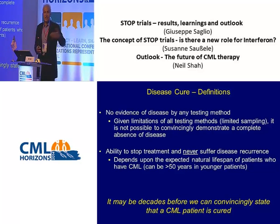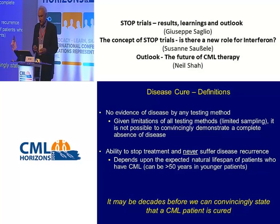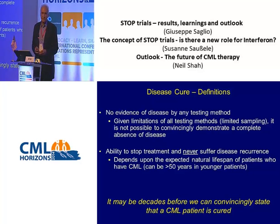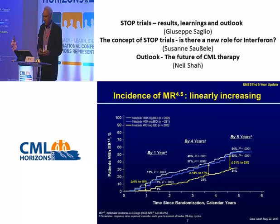What does it mean to never suffer disease recurrence? We have follow-up of five or ten years in some rare instances of patients who've stopped therapy. But for somebody who's 20 or 30 years old, it's really difficult to be sure that their disease may never come back during the course of the next 50 years. It will be decades before we can convincingly state that a CML patient is cured using that definition.